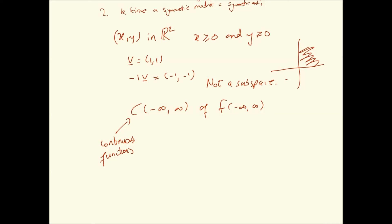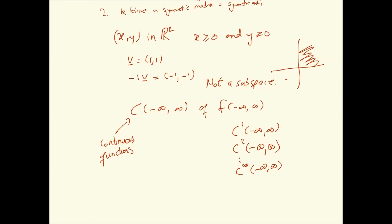Similarly, C1(−∞, +∞) — the space of functions with continuous first derivatives — is also a valid subspace of F(−∞, +∞). Adding two such functions still yields continuous first-order derivatives, and scalar multiplication has no effect. This extends to C2(−∞, +∞), the space of continuous second derivatives, and so on up to C∞, which is the space of infinitely differentiable functions. These are all valid subspaces of F.